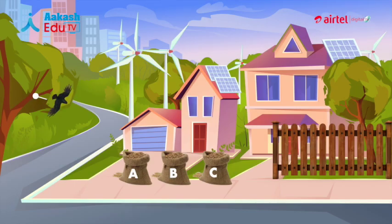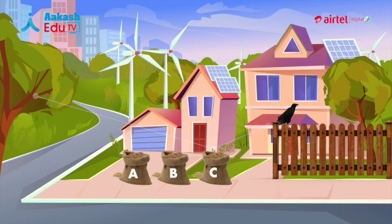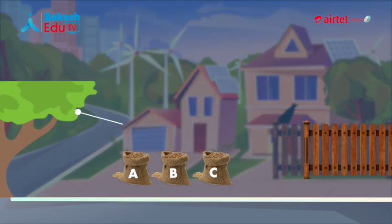Aap jaan kar hairan hoonge that the crow will opt for heap C with maximum probability, because out of the three this is the path of shortest time. Nature nae aise instincts hum savi ko survival ke liye diye hain. Aayye, choice of C ke piche ki physics samajhte hain.